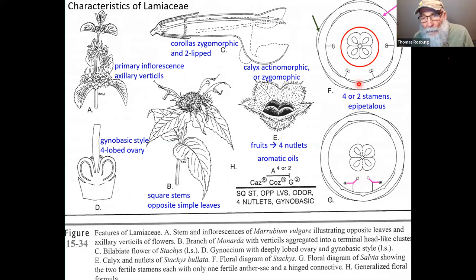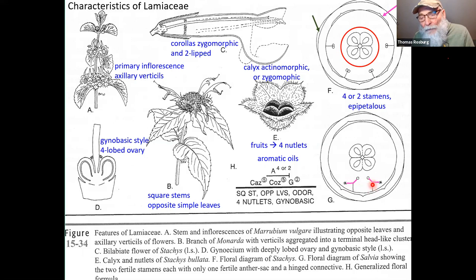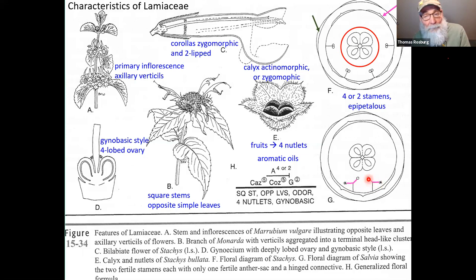Here we see four stamens, and here we see two stamens. This is the situation in Salvia, where there are just two stamens. These purple structures are the connectives. One of the anthers is fertile and will produce pollen, and one is sterile and does not produce pollen. They are connected by this connective or filament — this is important as a mechanism involved in pollination, which we'll see in the upcoming video.